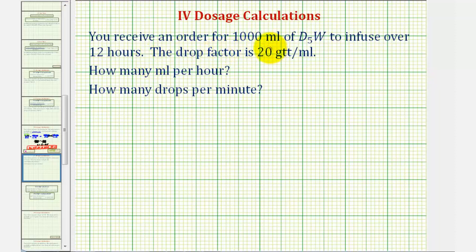You receive an order for 1,000 milliliters of D5W to infuse over 12 hours. The drop factor is 20 drops per mil. We want to determine the flow rate in milliliters per hour and also the drops per minute.